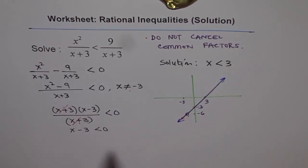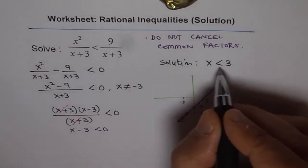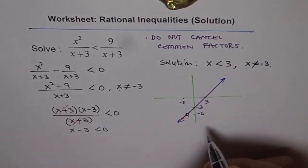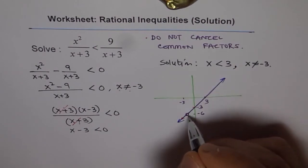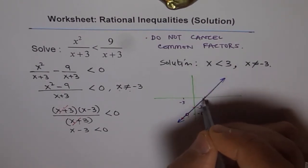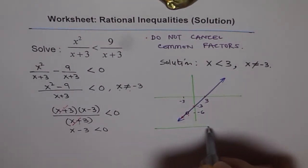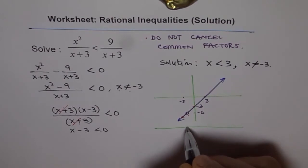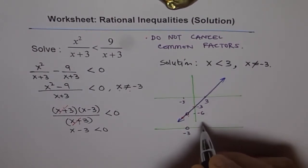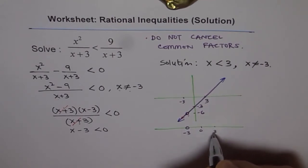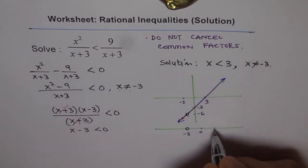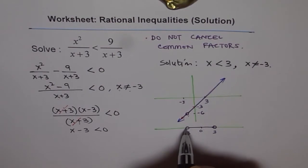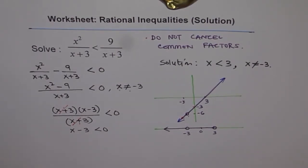But be careful: always write that x is not equal to minus 3 as your restriction. Now let me write the answer on a number line. We have a hole at minus 3, and 0 and 3 are also marked. We are not including 3 because the inequality is strictly less than 0, so there is an open point at 3. Everything to the left, excluding minus 3, is your solution on the number line.